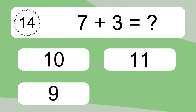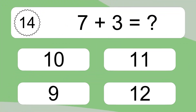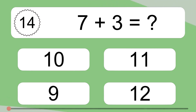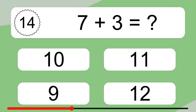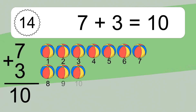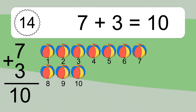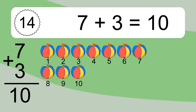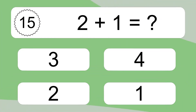Seven plus three equals what? Seven plus three equals ten. Let's count it: one, two, three, four, five, six, seven, eight, nine, ten. Two plus one equals what?